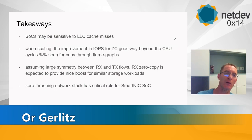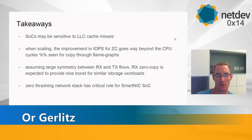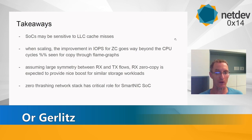To conclude, the takeaways from this performance study: our SoCs — and possibly others — are sensitive to last-level cache misses, and many LLC misses have a system-wide effect. When scaling, the improvement in IOPs from zero copy goes beyond what you would see from flame graphs alone. Assuming some symmetry between receive and transmit in networking applications, this study showed a very nice boost from transmit zero copy, and we expect similar benefits for receive zero copy in similar storage applications. Zero-trashing network stacks have a critical role for smart NIC SoCs.